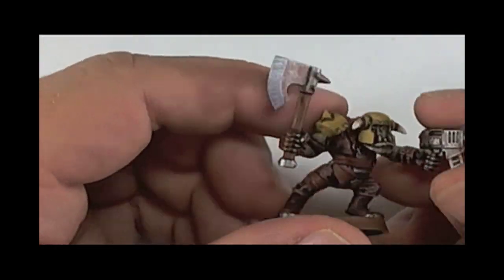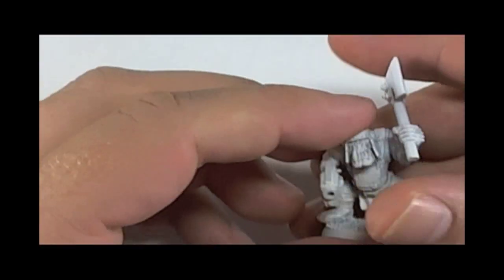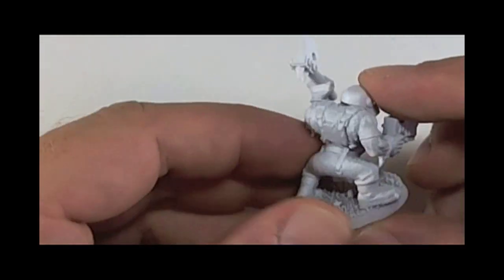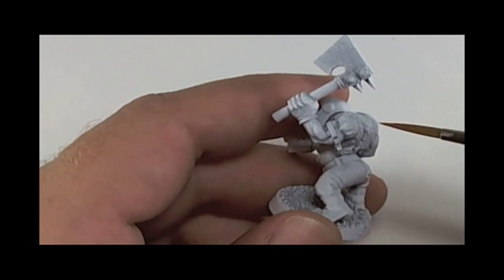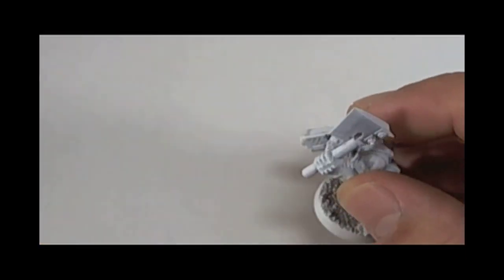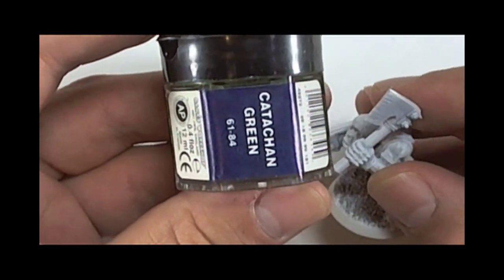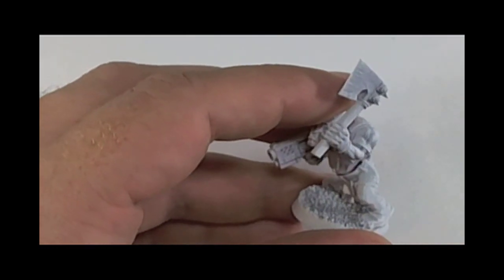So this is a sample of the orc, a finished product, and this is the orc we'll be using today. You'll see when we apply the washes how it flows into the creases and produces highlights and shadows on itself.